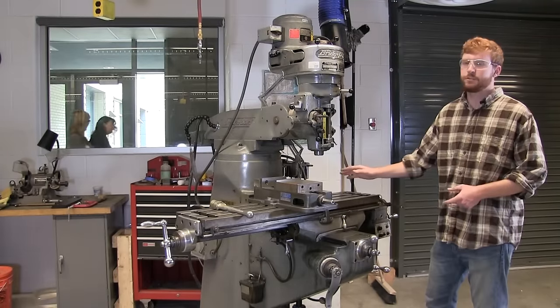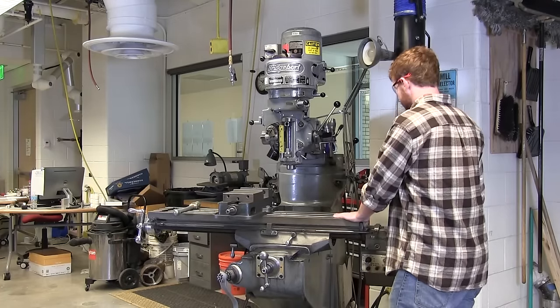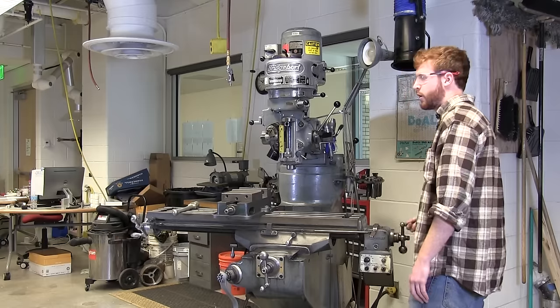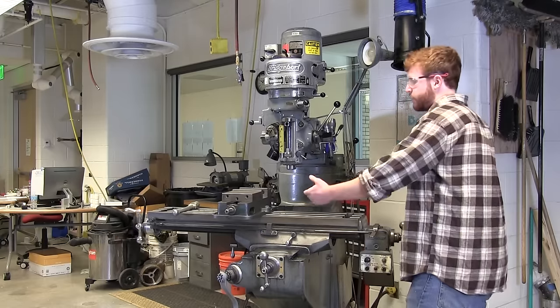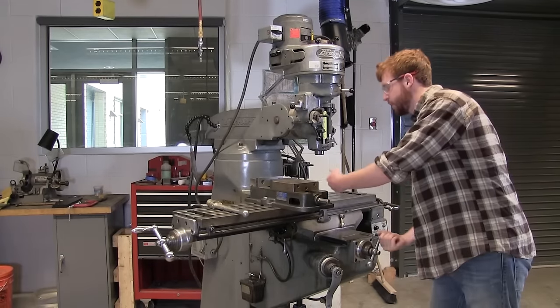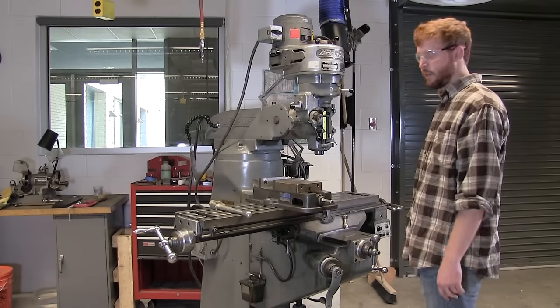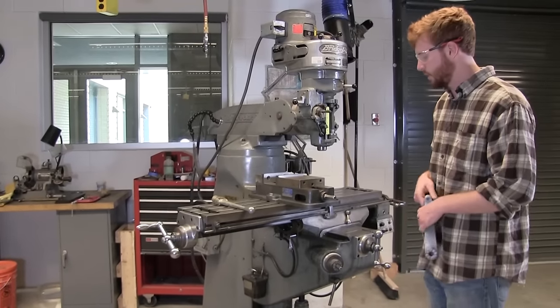So this mill has three axes. It has this handle which moves the table left and right, and counterclockwise moves the table towards you, and clockwise moves it away from you. This handle moves the table forwards and backwards relative to the operator, which stands pretty much right here. It also has a z-axis which raises and lowers the table.